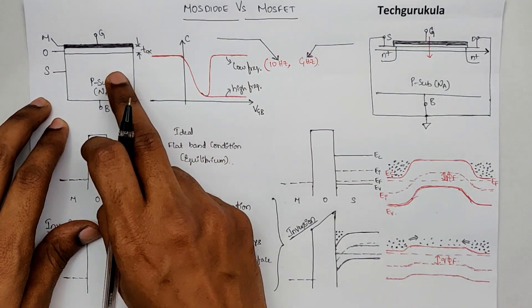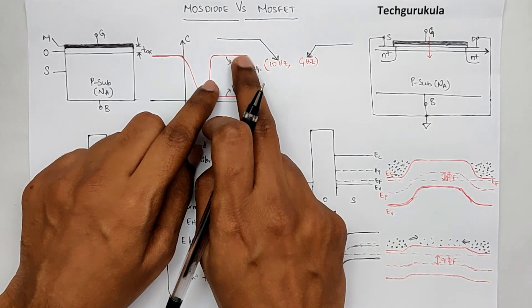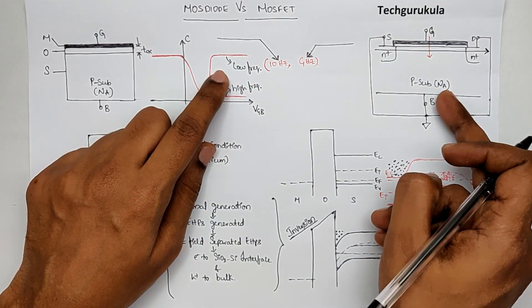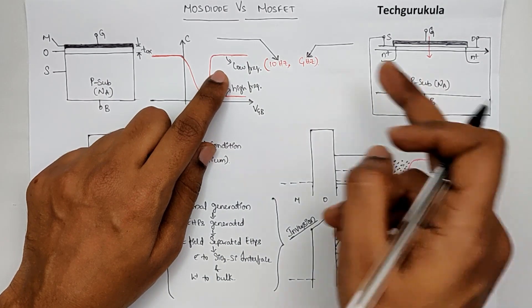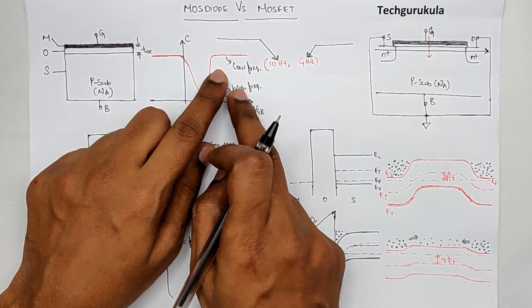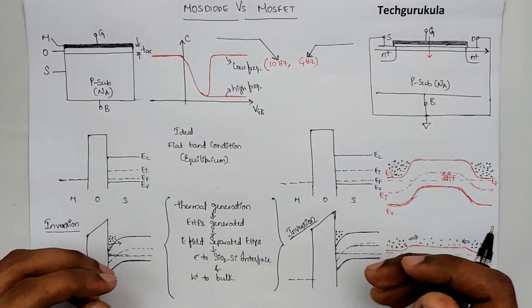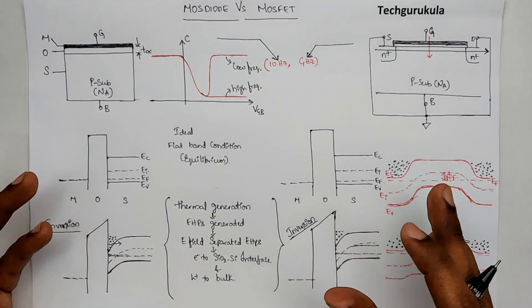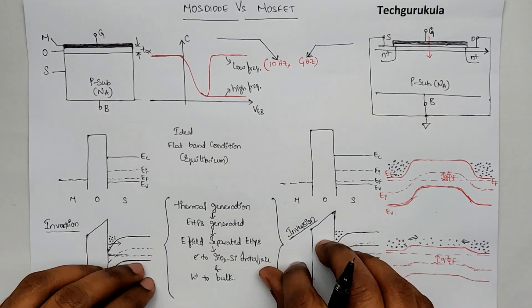Now this explains why MOS capacitor cannot have inversion at gigahertz frequencies, but MOSFET when used as a MOS diode can actually have characteristics or inversion characteristics at gigahertz range, where now we have all the silicon chips operating in microprocessors or SOCs working at gigahertz.